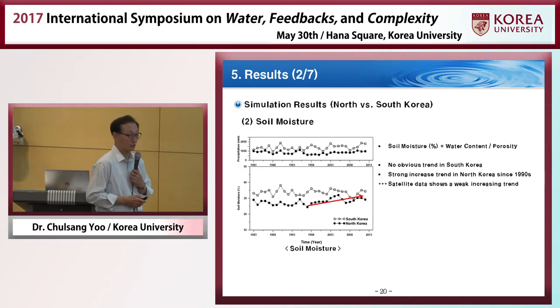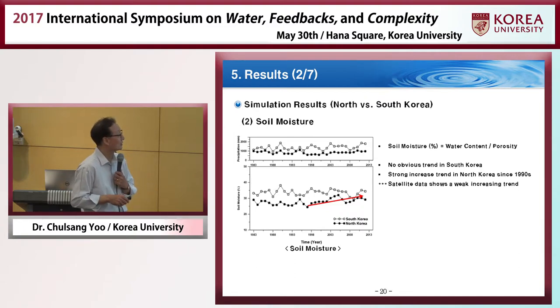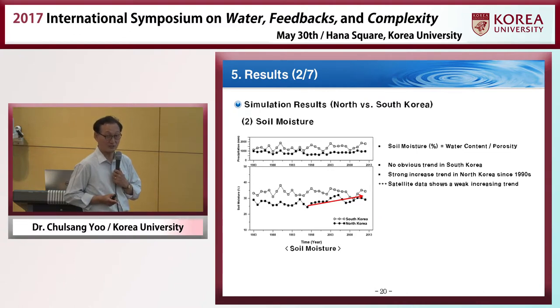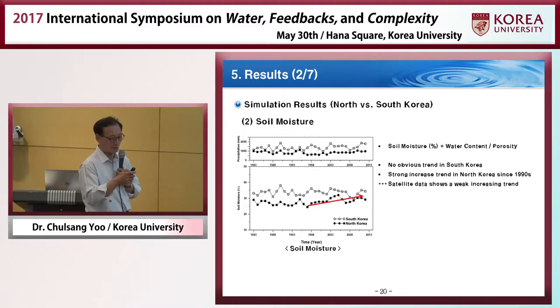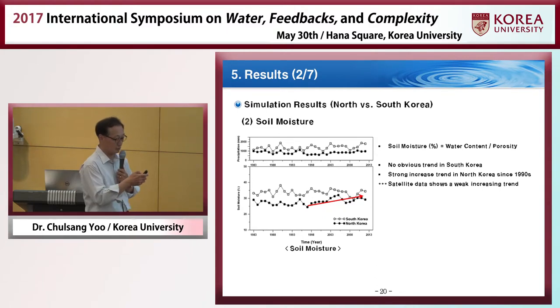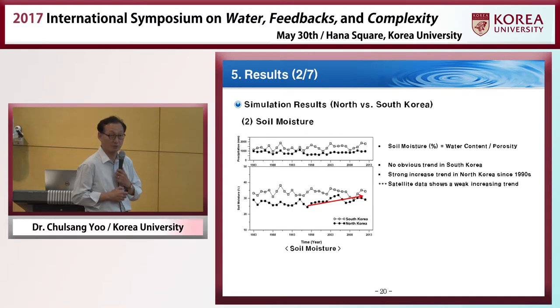This is about the soil moisture data. Quite interestingly, since the 1990s, the soil moisture value in North Korea is also increased. Originally, we expected that the soil moisture level would decrease during this period, but the result was totally opposite. We are not sure why this result was derived, but this is the result. On the other hand, similar to the runoff case, the soil moisture level remains almost the same in South Korea.